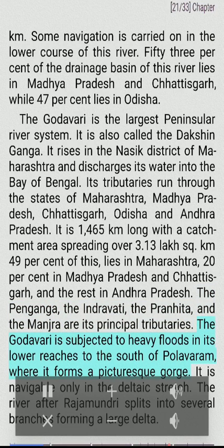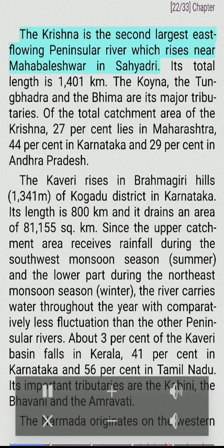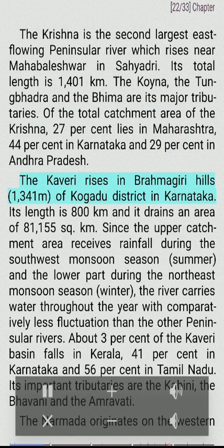The Godavari is subject to heavy floods in its lower reaches; it is navigable only in the deltaic stretch. After Rajamahendri, it splits into several branches forming a large delta. The Krishna is the second largest east-flowing peninsular river, rising near Mahabaleshwar in the Sahyadri, with a total length of 1,401 km. The Koyna, Tungabhadra, and Bhima are its major tributaries. Of the total catchment area of the Krishna, 27% lies in Maharashtra, 44% in Karnataka, and 29% in Andhra Pradesh.